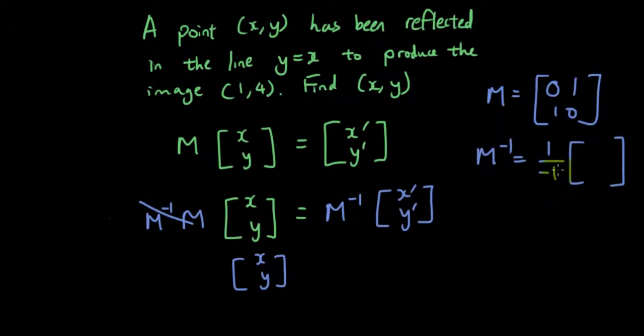And then we change positions between the two elements here and we make these two elements negative. So then this simplifies just to the exact same thing. So this is not often that you will get the exact same matrix.